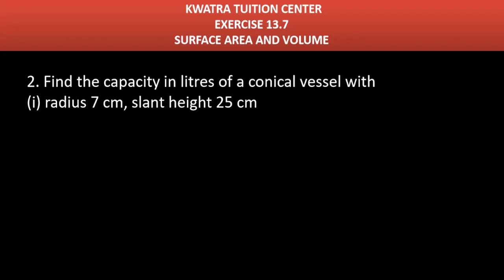Starting with question number 2, it says find the capacity in liters of a conical vessel with radius 7 cm, slant height 25. We have radius mentioned here and slant height mentioned here. Radius is given 7 cm, slant height is given 25 cm.